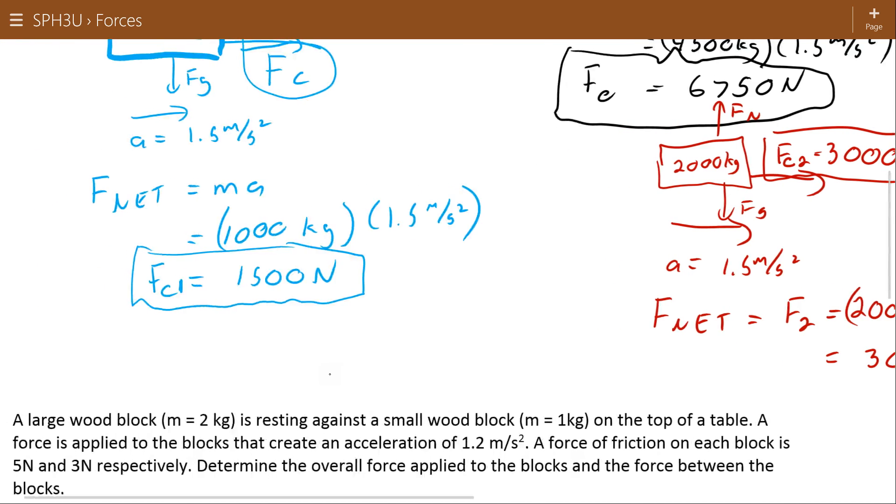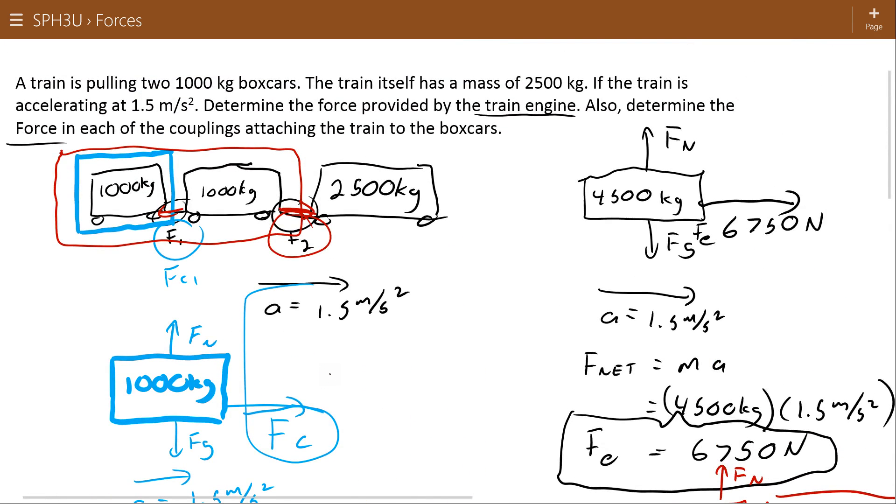So the point of this question is, when you're trying to find out forces within an object, to make it easy, what you want to do is make clever choices about how you divide up the object. If the whole object has to have the same acceleration, then you can divide them up how you need to, to try and figure out what the force must be. This coupling effectively has to pull both of these cars, so it makes sense to consider the total of both cars. Where this coupling only has to pull this one car, so it only makes sense to look at that one car.